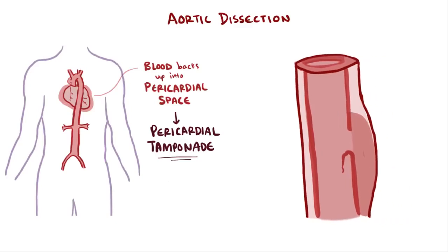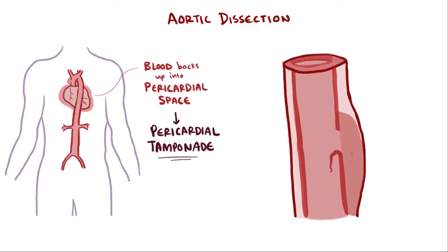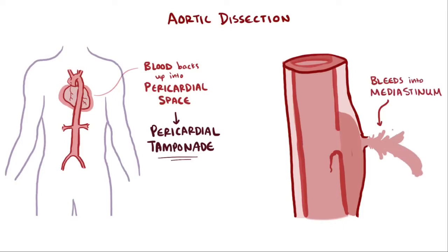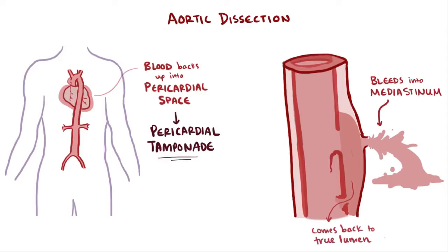The blood flowing through the false lumen could also puncture a hole through the tunica media and tunica externa and bleed into the mediastinum, which would kill you really fast because that's a lot of blood leaving the vascular system quickly. The tunneling blood could also puncture a hole into the tunica intima and return into the true lumen, which isn't great, but all things considered, it could be worse.